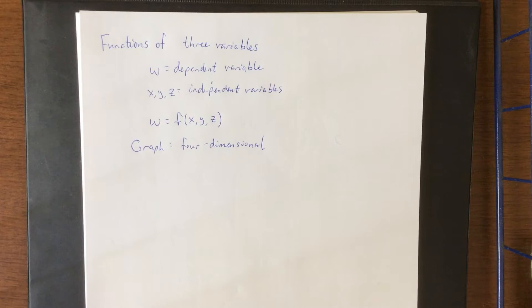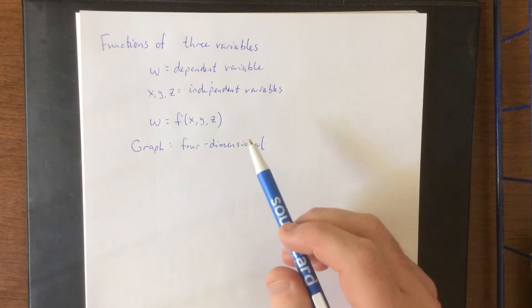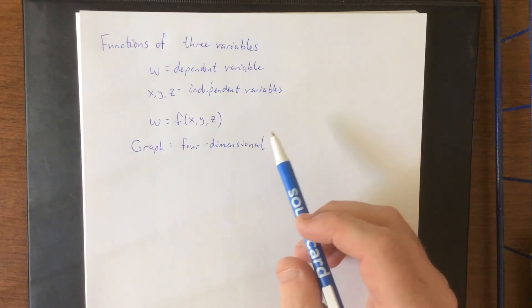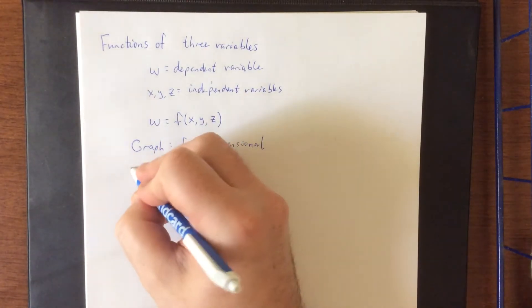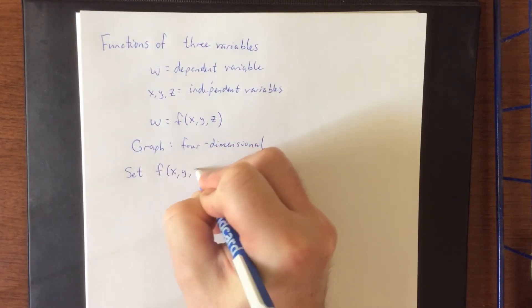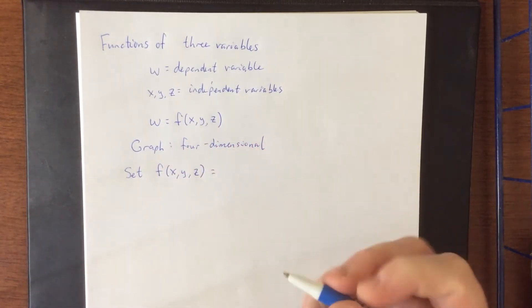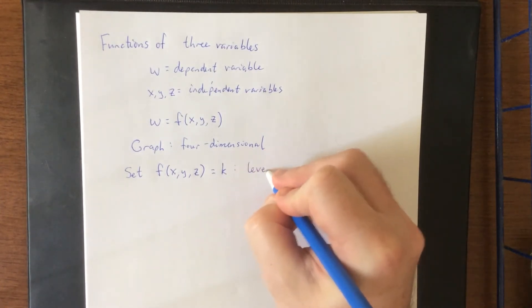It becomes kind of difficult to visualize. However, what we did for graphs of functions of two variables is we said we can come up with a two-dimensional rendering of this by saying we have level surfaces by setting our dependent variable equal to a constant. So if we do set our function equal to a constant, then you will create a level something.